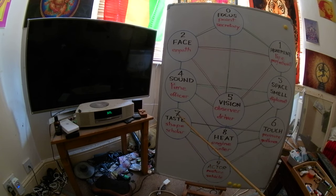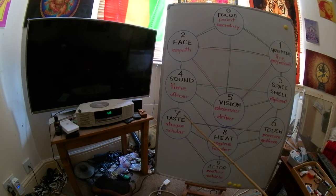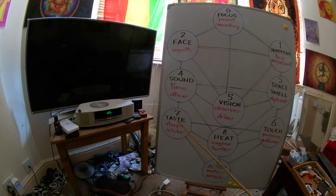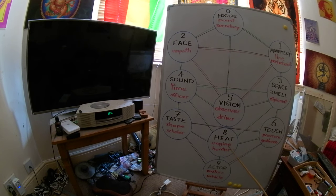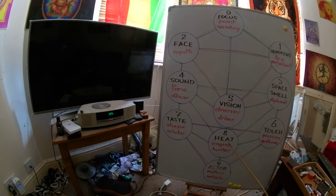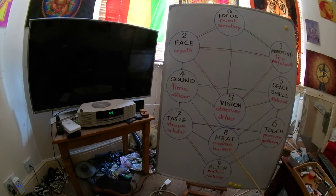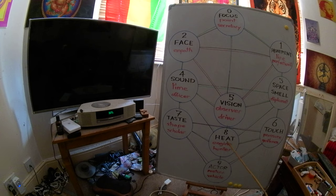The one who knows about these things is the scholar. The scholar is aware of the catalogue of all the different shapes and tastes. When the shape or the pressure map moves at right angles, we get heat generated.